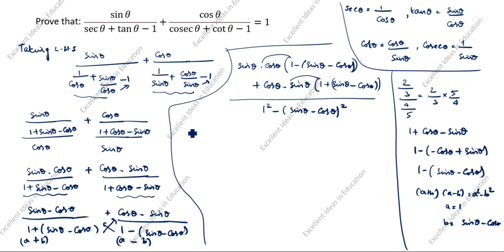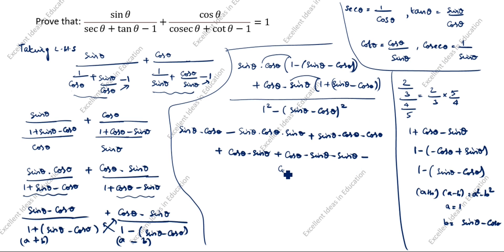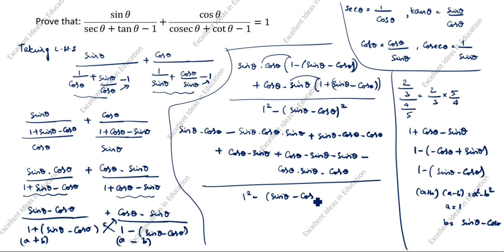Expanding the numerator: sinθcosθ × 1 = sinθcosθ, then sinθcosθ × (−sinθ) = −sin²θcosθ, then sinθcosθ × cosθ = sinθcos²θ. For the second term: cosθsinθ × 1 = cosθsinθ, then cosθsinθ × sinθ = cosθsin²θ, and cosθsinθ × (−cosθ) = −sinθcos²θ.